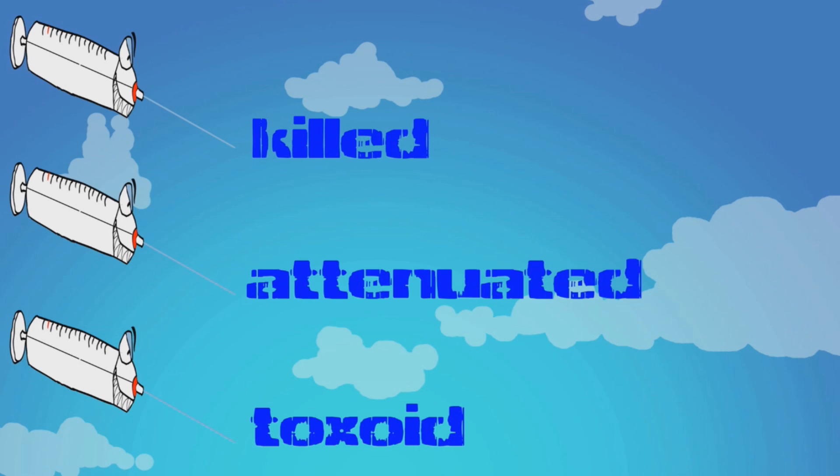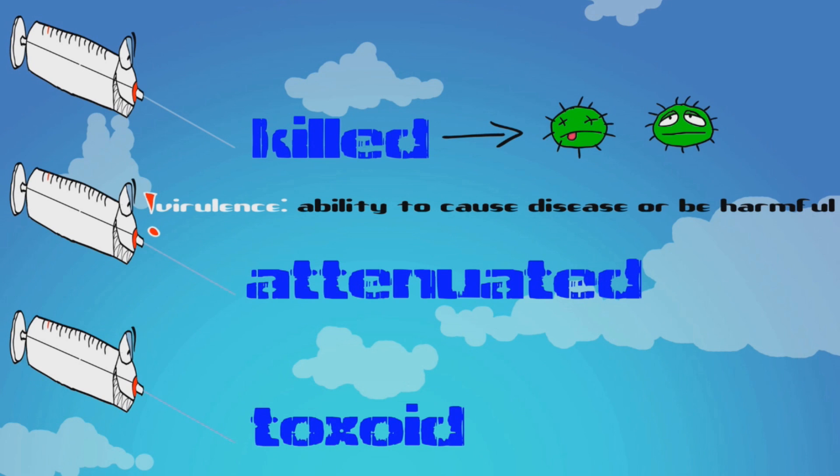Killed vaccines include dead or inactivated, but previously virulent pathogens. Attenuated vaccines contain live or working pathogens that have been made in a lab to disable their virulence. So basically, they don't work anymore. Toxoid vaccines use inactivated toxic compounds.